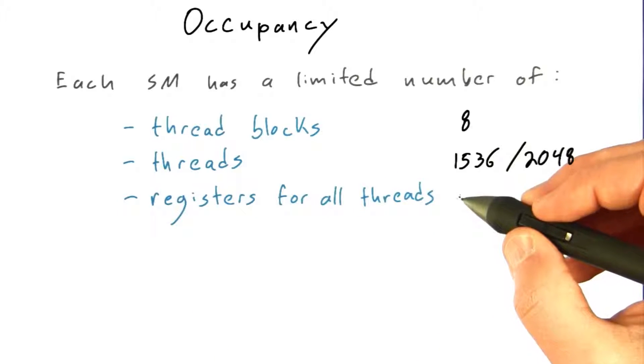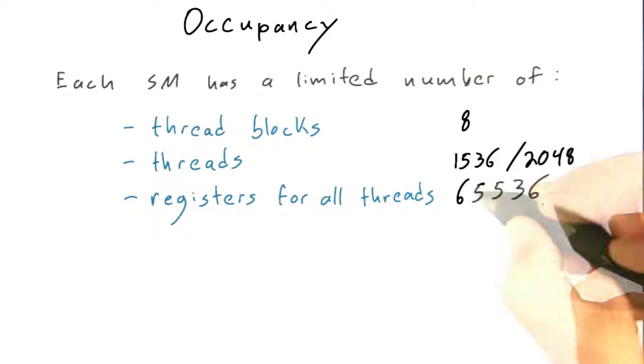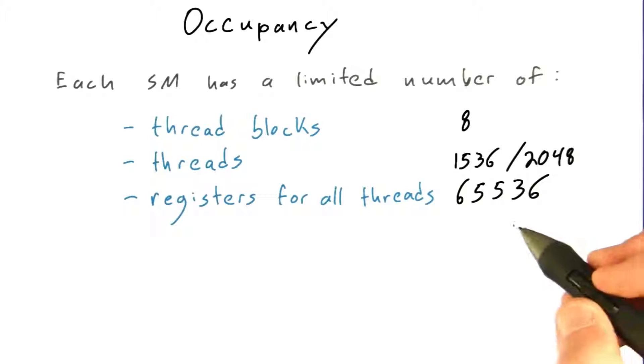Every thread running a given kernel takes a certain number of registers, and there's a total number of registers for all of the threads on the SM, equal to 64K on most GPUs.